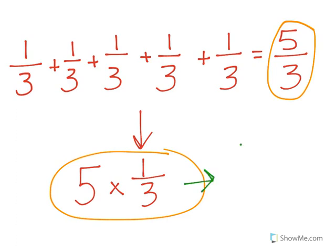And we know that 5 thirds is the same as 5 divided by 3. So 5 times 1 third can also be written as 5 divided by 3.